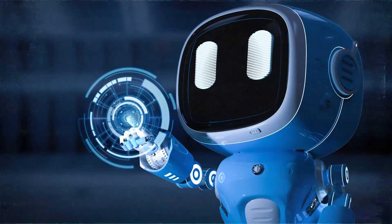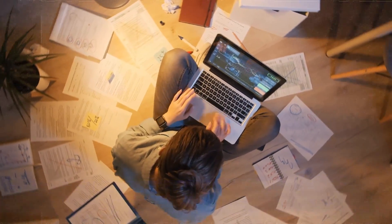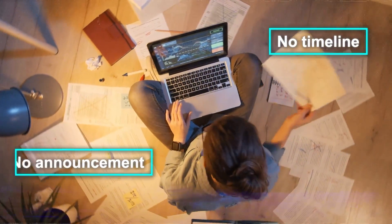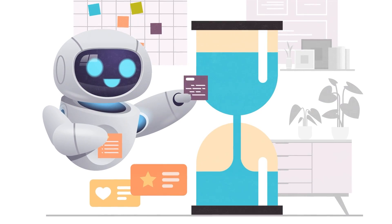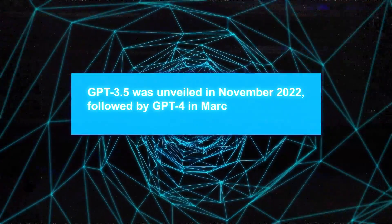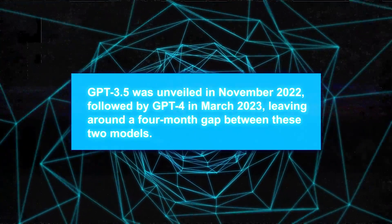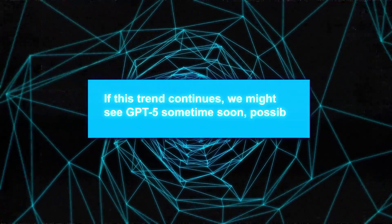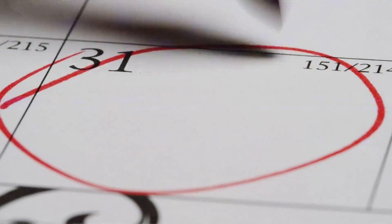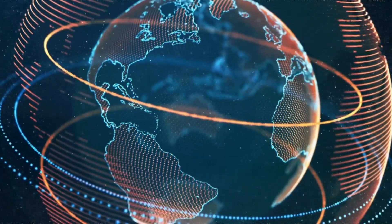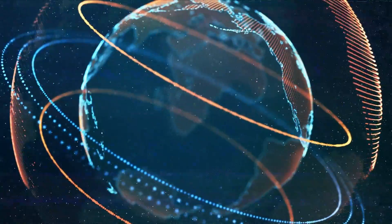A question many might be pondering is when GPT-5 will be released. OpenAI hasn't provided any official timeline or announcement. Based on past release patterns — GPT-3.5 was unveiled in November 2022, followed by GPT-4 in March 2023, leaving roughly a four-month gap — we might see GPT-5 sometime soon, possibly before the end of this year. However, the ever-changing AI landscape could bring unexpected surprises or delays.